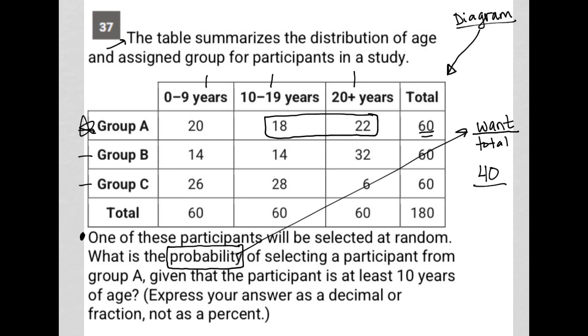Those participants in group A that are in the 0 to 9 year old category would not count, again, because the question said, given that the participant is at least 10 years of age.